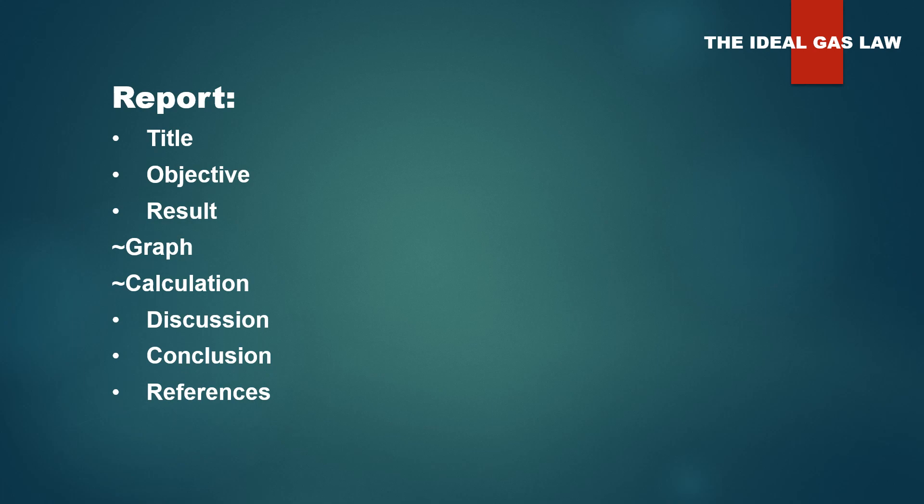So, for this experiment, what you need to do, just write down the title, objective, result. Based on the result, you have to plot the graph for part A and then perform the calculation for part B. And then, just do the simple discussion based on the instruction. And then, write down the conclusion and reference.